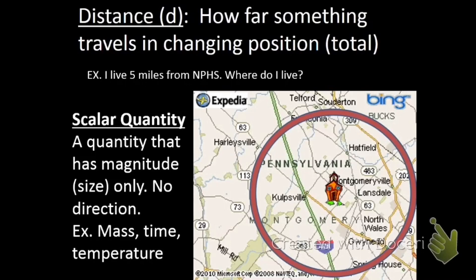Distance is a scalar quantity, which means a quantity that has a magnitude, a size, but no direction. So distance is one. There's some others that we'll be talking about this year, like mass, time, and temperature. All of these have magnitudes, but they don't have directions.